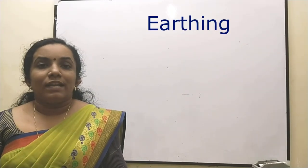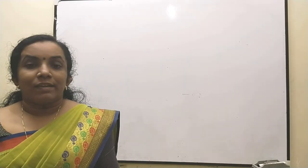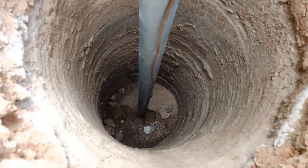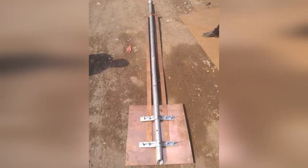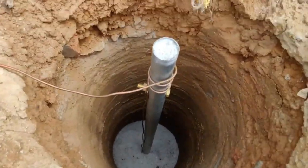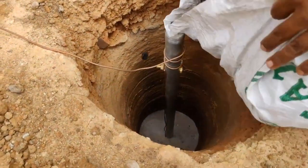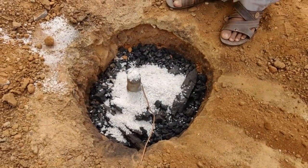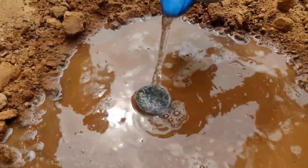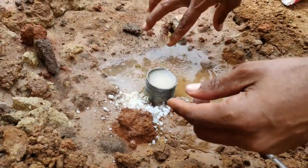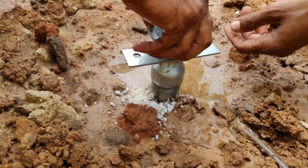Earthing is of two types: local earthing and earthing for the appliance. For local earthing, a hole about two to three meters deep is dug in the ground. A copper rod covered by a hollow insulating pipe is inserted, and a thick copper plate of 50 × 50 cm is welded at the lower end. The plate is surrounded by a mixture of charcoal and salt, which makes good contact with the earth. Water is poured through the pipe periodically to keep the ground damp and ensure proper conduction.